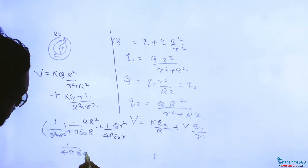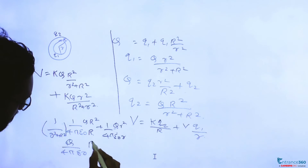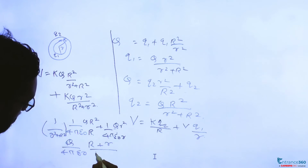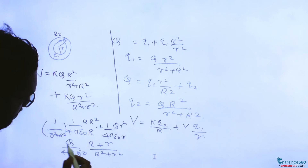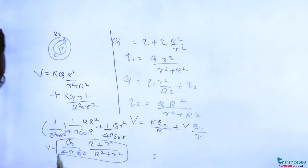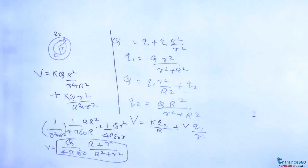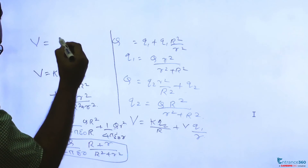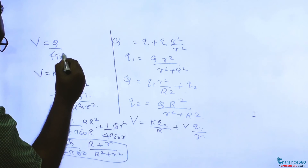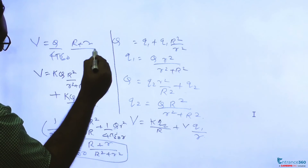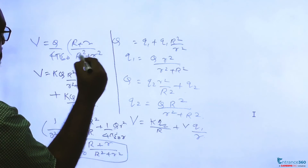So the potential simplifies to Q by 4πε₀ times (r + R) by (r² + R²). This is our final answer for the potential at the common center.